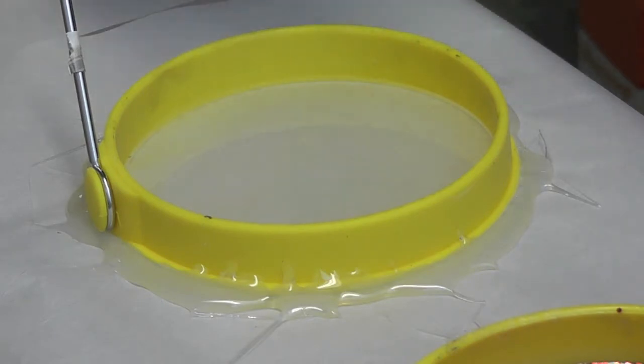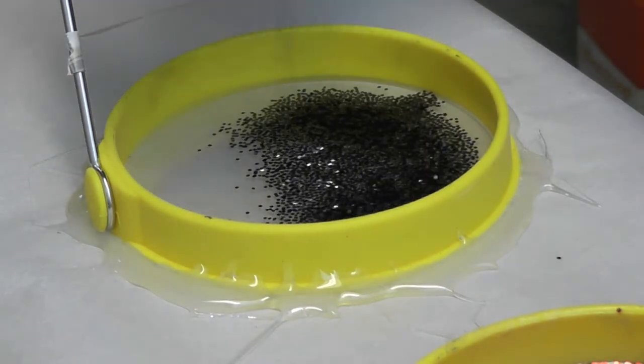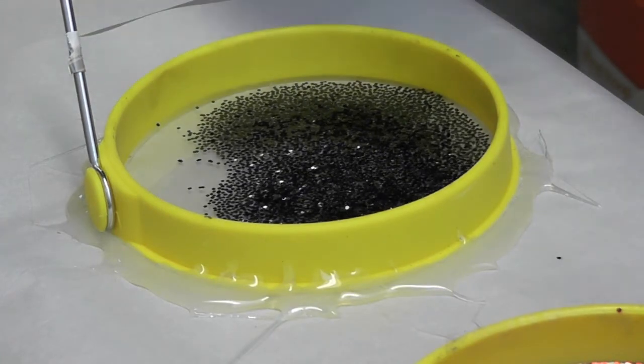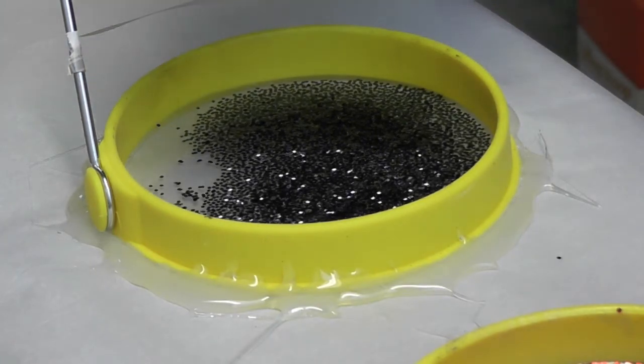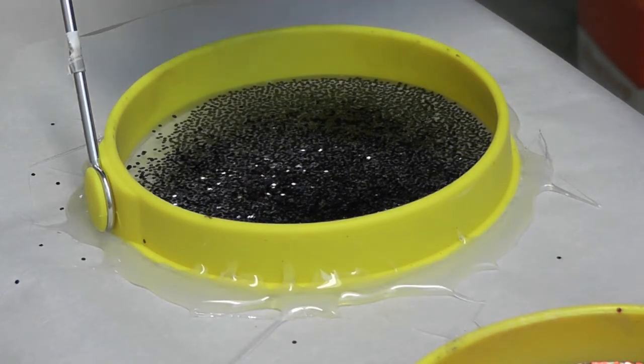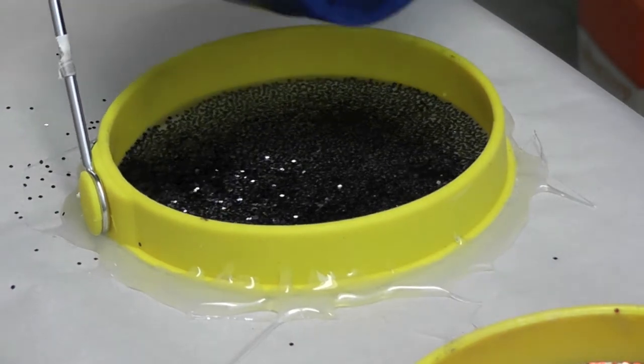And we're going to sprinkle it into the mold and hopefully this will sink to the bottom. If it doesn't, that's okay, we'll just add an extra thin pour to it. But hopefully this will sink and leave a nice smooth surface behind.